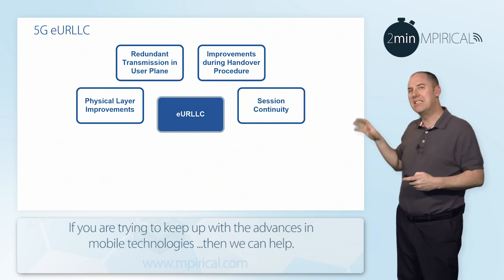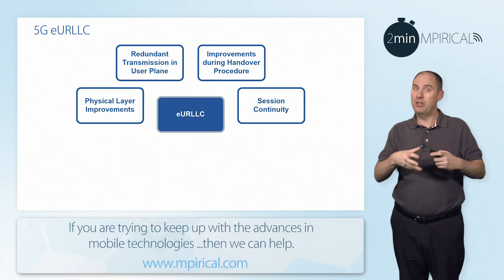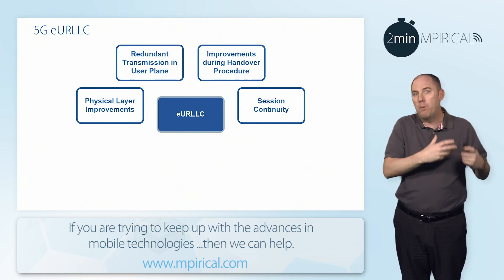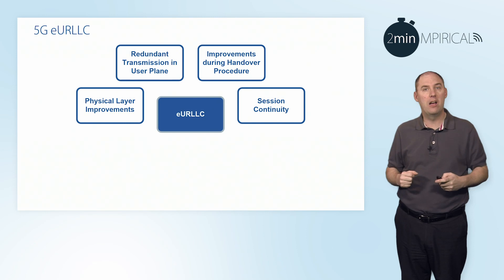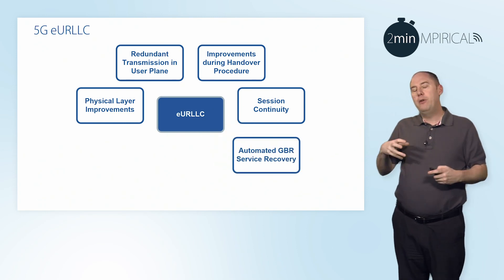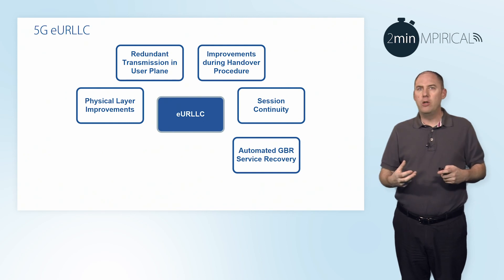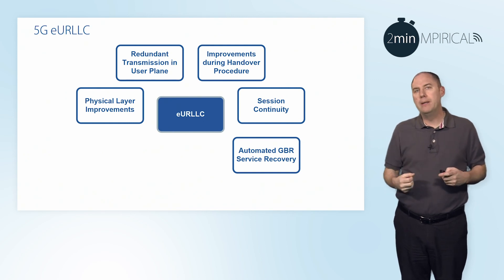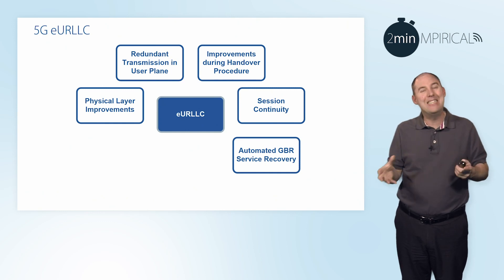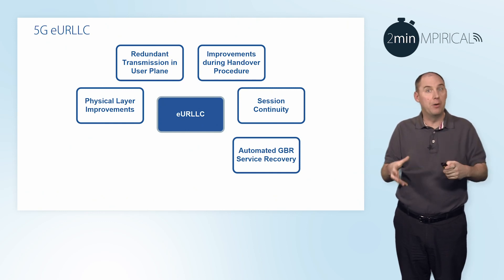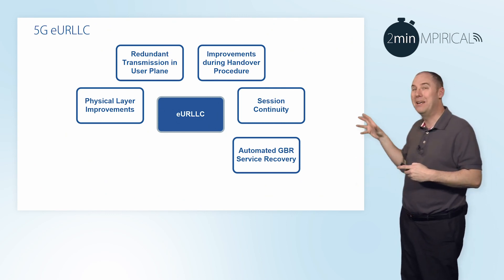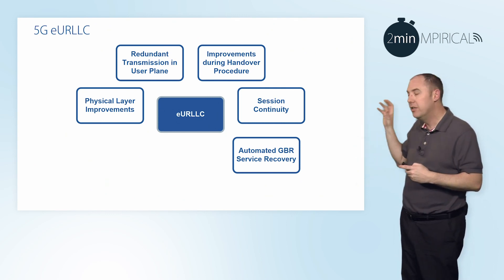This links into service continuity. We've got this guaranteed bit rate and we have to maintain that service, so it's not only about optimising the handover — it's optimising the service as well. What happens if you go into a congested cell and drop that guaranteed bit rate? Typically that could be the end of it. But what we need to do is get that guaranteed bit rate back up and running very quickly. So we've added features related to automated GBR — guaranteed bit rate — service recovery.